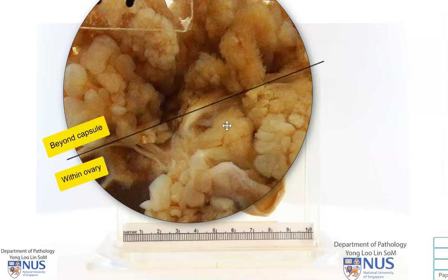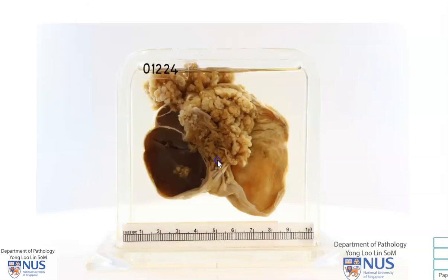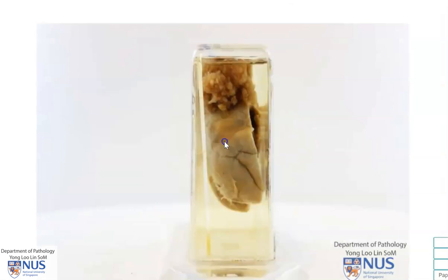This tumour appears to be invading into the cyst wall, which is essentially the rest of the ovarian compressed parenchyma, and going all the way extending to the serosal surface. This is a feature of malignancy, and we can see clearly that this is the tumour that is beyond the serosa.